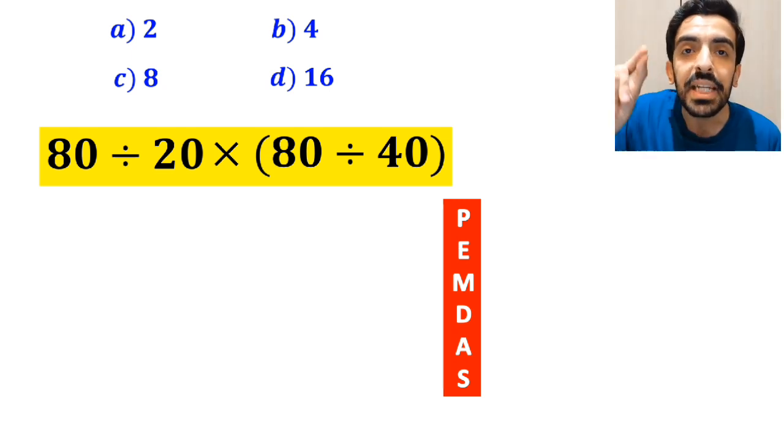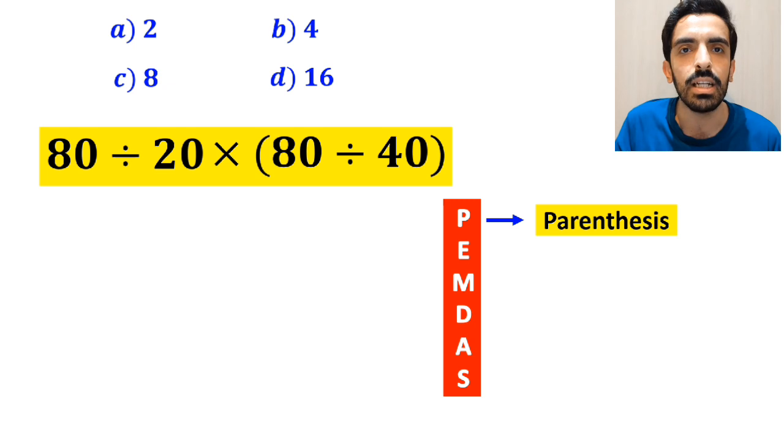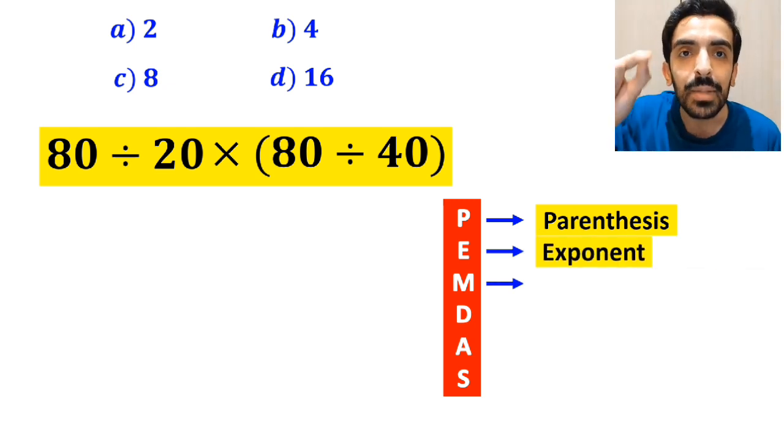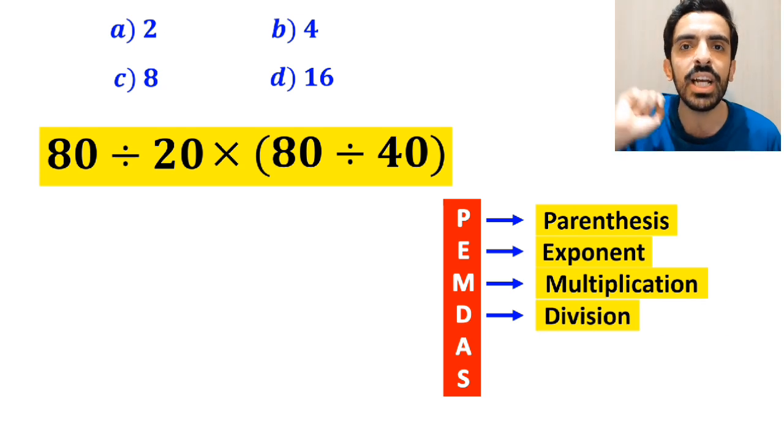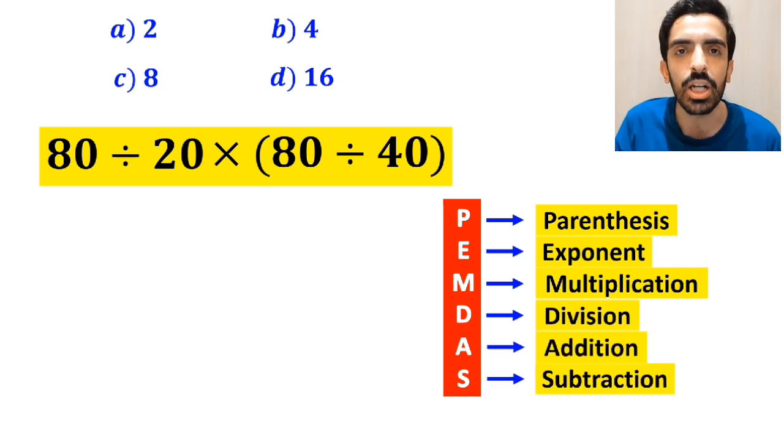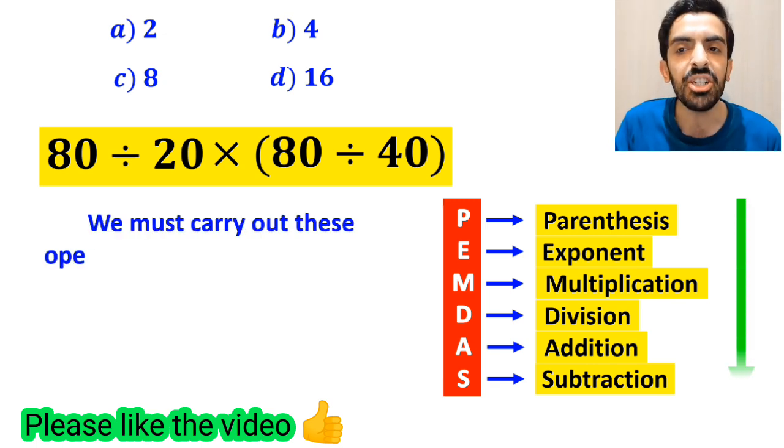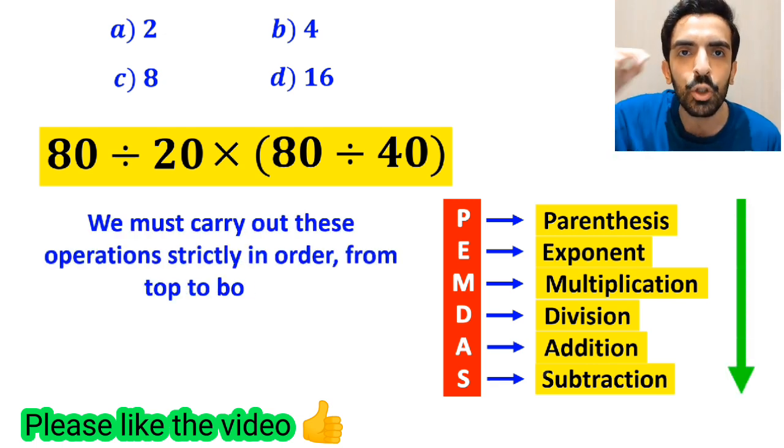In this rule P stands for parenthesis, E stands for exponent, M stands for multiplication, D stands for division, A stands for addition, and S stands for subtraction. We must carry out these operations strictly in order from top to bottom.